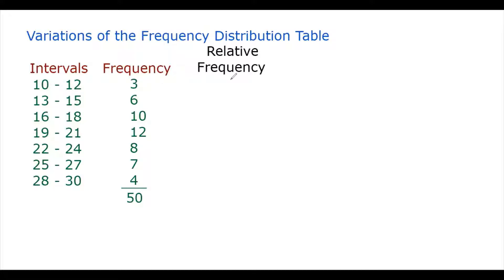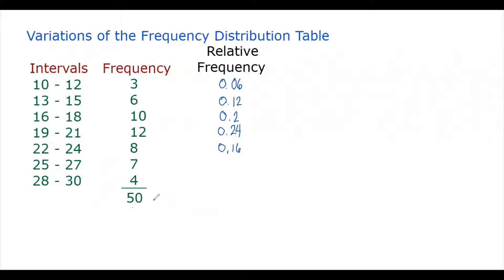the relative frequency is 3 divided by 50, which gives us 0.06. Then 6 divided by 50 is 0.12, and 10 divided by 50 is 0.2. Then 12 divided by 50 is 0.24, 8 divided by 50 is 0.16, 7 divided by 50 is 0.14, and 4 divided by 50 is 0.08. So this is the relative frequency.